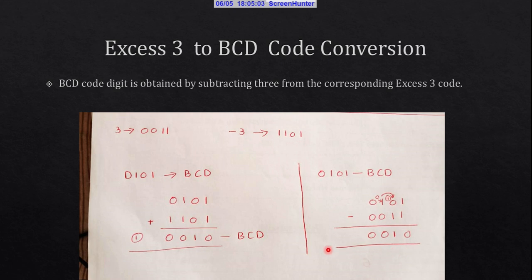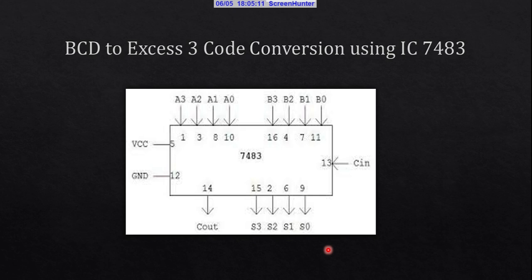You can adopt either method to convert XS3 code to BCD. We can also use a 4-bit parallel IC to perform BCD to XS3 code conversion, and this IC can also be used to convert XS3 code back to BCD.